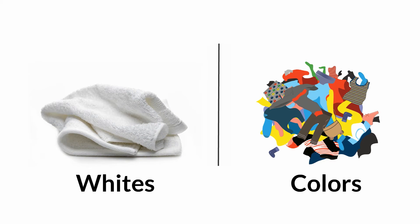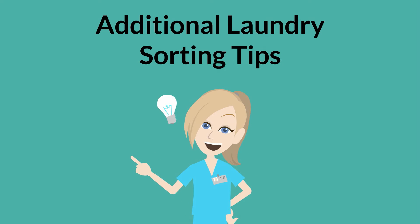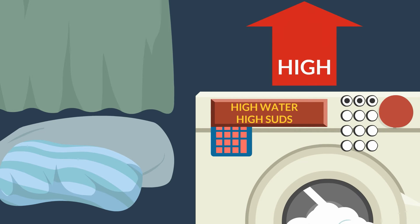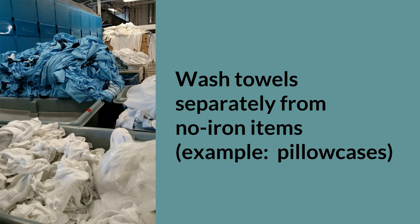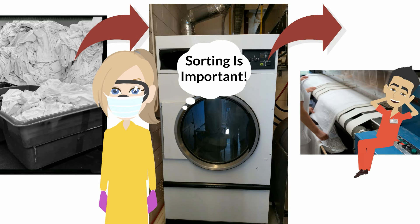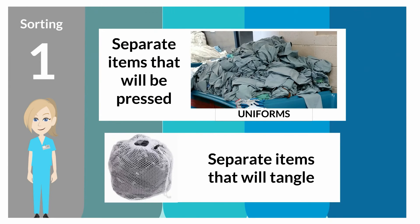White items are washed separately from colored items due to color bleeding and staining. Additional laundering sorting tips: Wash loosely woven fabrics, such as curtains and blankets, at a high-water level setting with high sudsing to protect the fabric. Sort linens according to the type of processing equipment being used to wash them. For instance, wash towels separately from other no-iron items, which require much shorter extract and drying cycles. Pre-sort linen which will go directly into dryers from that which will go to flatwork ironers. Separate uniforms that will go to presses or steam tunnels. Process items that tangle easily by placing them into nylon nets to prevent tangling.